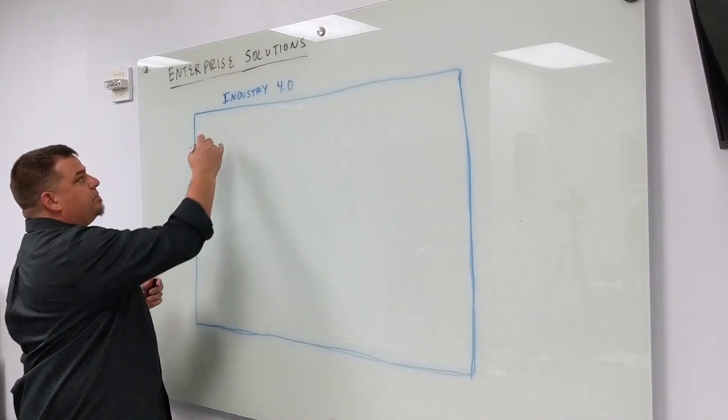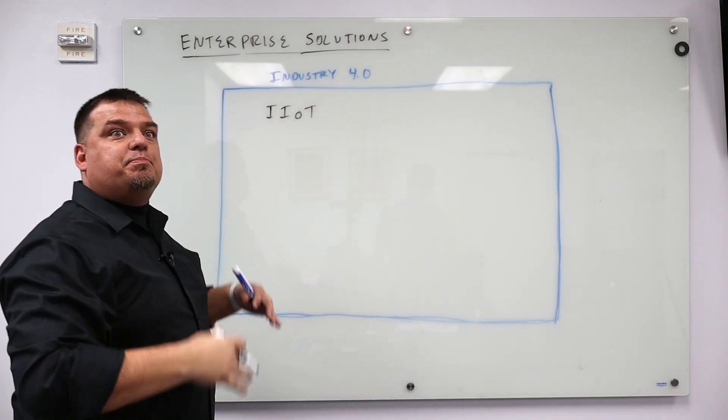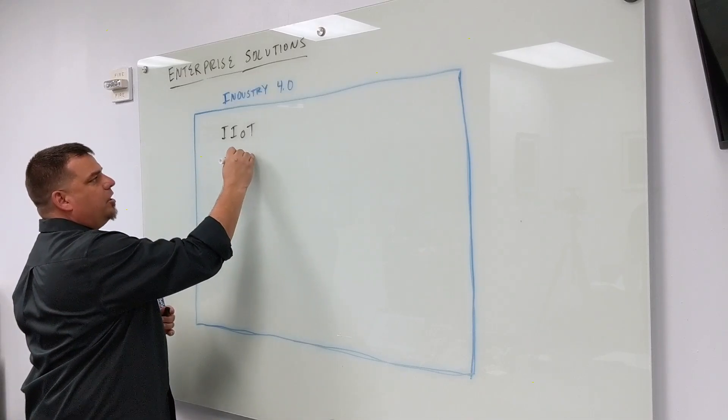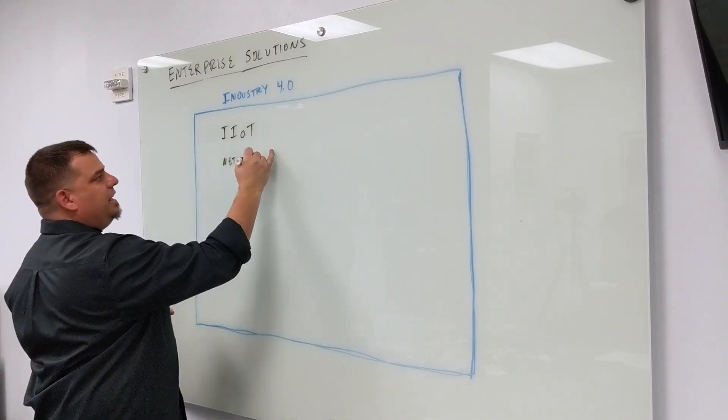IIoT is a subset. IIoT is part of Industry 4.0. Networks, so networking your equipment together, is part of Industry 4.0.